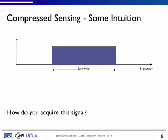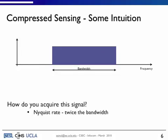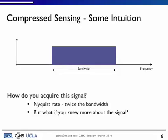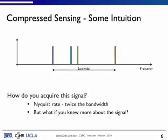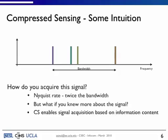To give you an intuition about how compressed sensing works, so if you've got a signal which has some bandwidth and you want to acquire the signal, what you typically do is use the Nyquist rate, and you say we're going to sample it at twice the bandwidth. But what if you knew something more about the signal? For example, that it occupied this band, but there were very few frequencies within the band themselves. So compressed sensing is a theoretical framework that allows you to acquire the signal based on its information content rather than its bandwidth content.